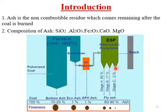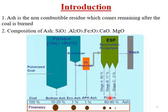Fly ash has various uses. It is used in the cement industry for manufacturing cement. It is also used in concrete production. Additionally, fly ash is used in the brick industry for making bricks. So fly ash finds application in cement, concrete, and brick industries.